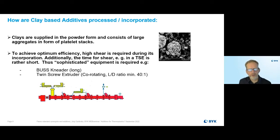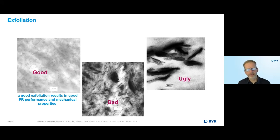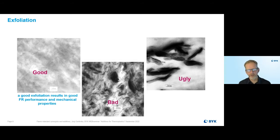On a twin screw, the clay is typically fed by side feeding, similar to how mineral fillers or flame retardants are fed. Exfoliation can vary in quality — if not done well, you get agglomerates as shown on the right-hand side. The ideal case on the far left shows clay dispersed well with each particle exfoliated as a single particle. Often a semi-good dispersion as in the middle picture is achieved, which we call still not ideal, but for many applications that so-called intermediate dispersion is already quite sufficient.